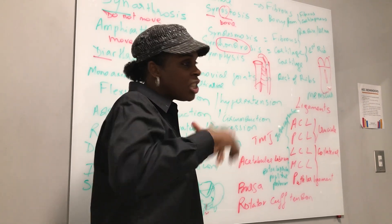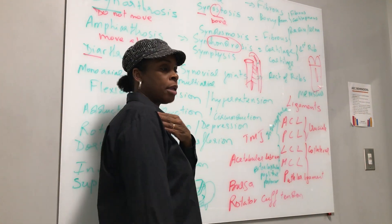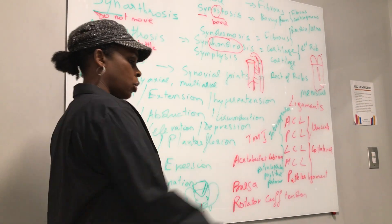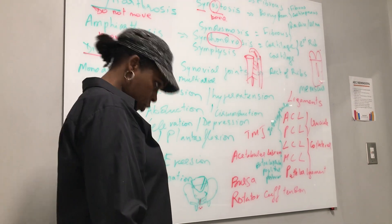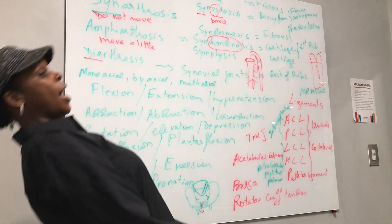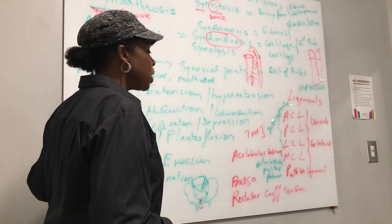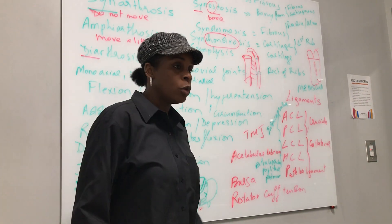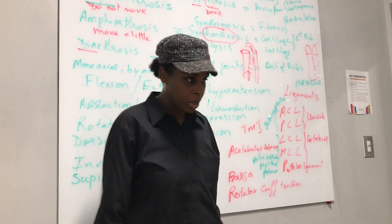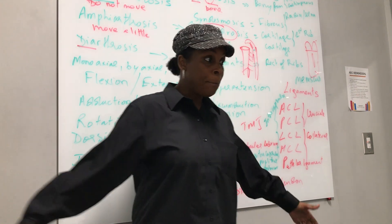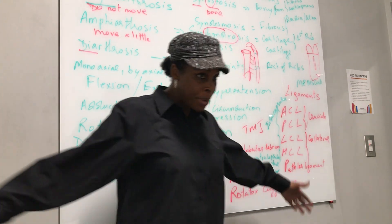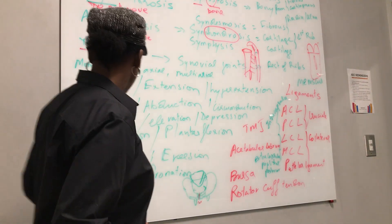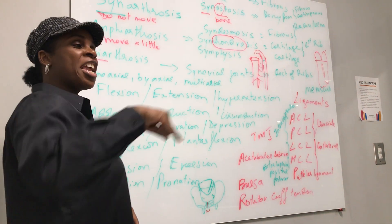Then if I take abduction and adduction — 'ad' means I'm adding to myself, moving toward the midline; 'ab' means I'm going away from myself laterally. So abduction, adduction. The same thing with my fingers — I can go abduction, adduction. So we have flexion, extension, abduction, adduction, and then rotation — I'm rotating around myself. Like hip rotation, or I can rotate my neck.